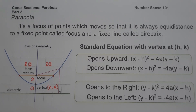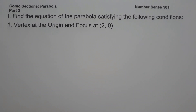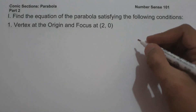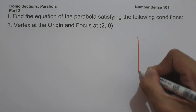These are the basic concepts you need to remember in order to understand what a parabola is. Now let's start with our examples. We are going to find the equation of the parabola satisfying the following conditions. On number one, the vertex is at the origin and the focus is at (2, 0). If you are given a set of points, the best thing to do is to sketch the graph. So let us draw a Cartesian coordinate plane.